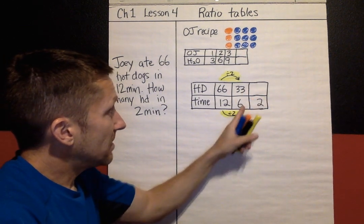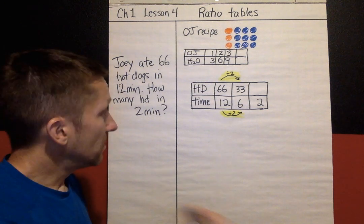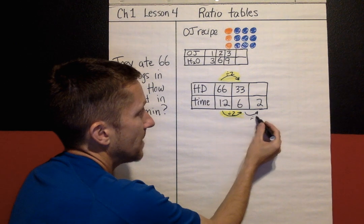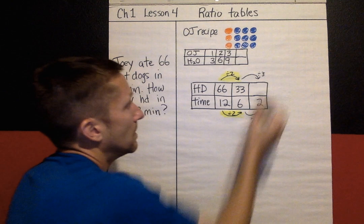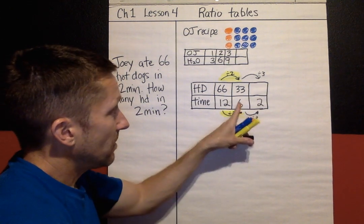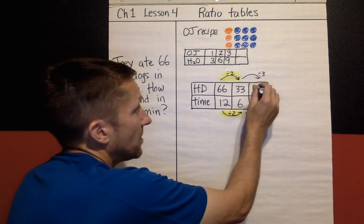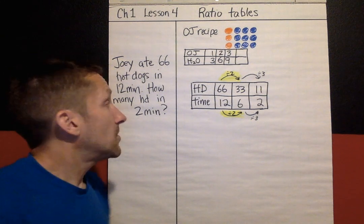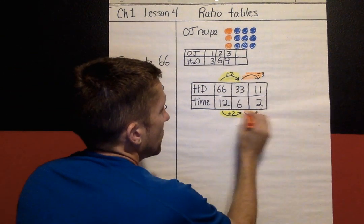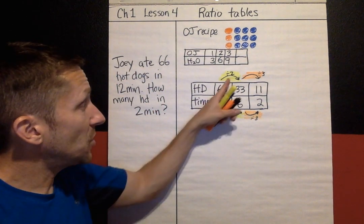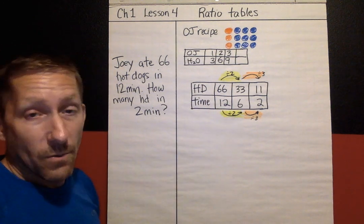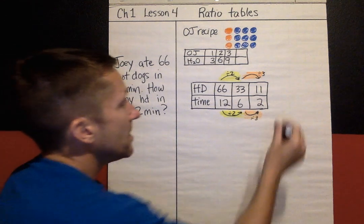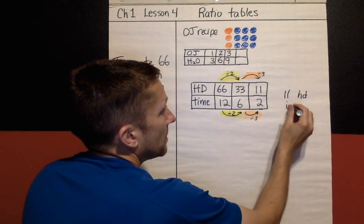Now I've got 33 hot dogs in 6 minutes. To scale down further — going from 6 to 2, I divided by 3. So I need to divide 33 by 3 as well, which gives 11. The key today is showing what you're dividing or multiplying by — it must be the same number. So the answer is: if Joey ate at a constant rate, he would have eaten 11 hot dogs in 2 minutes.